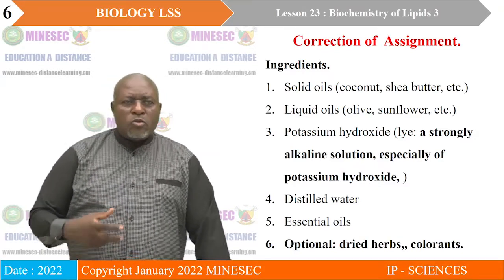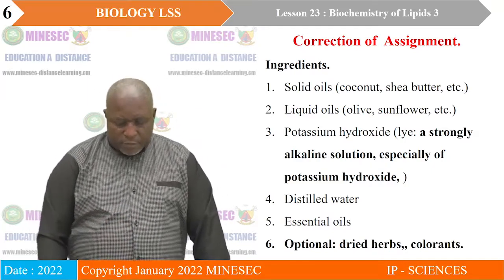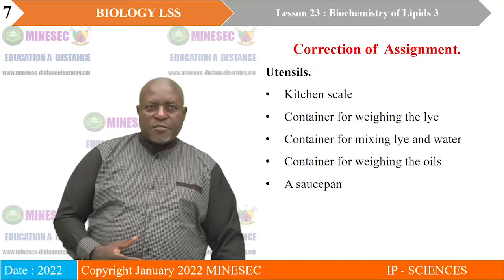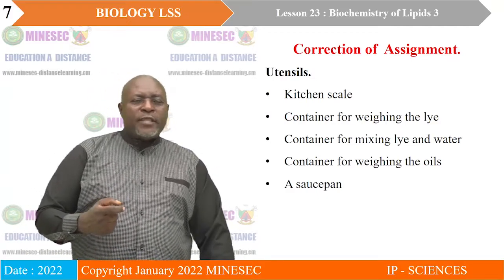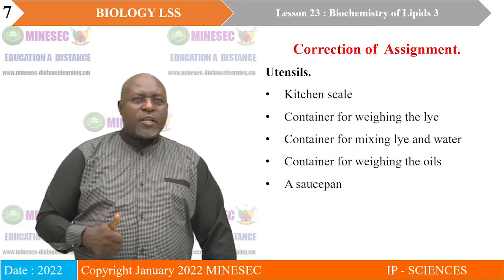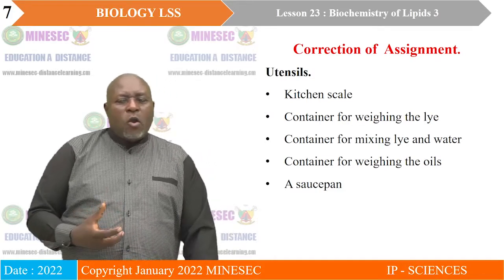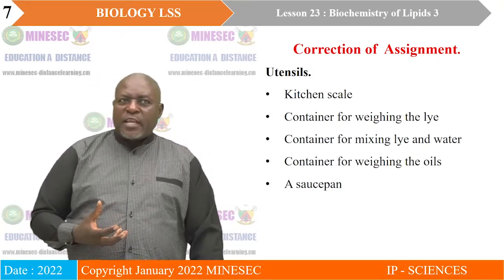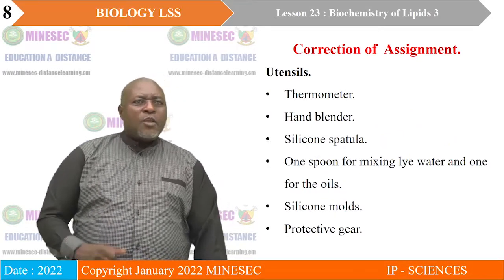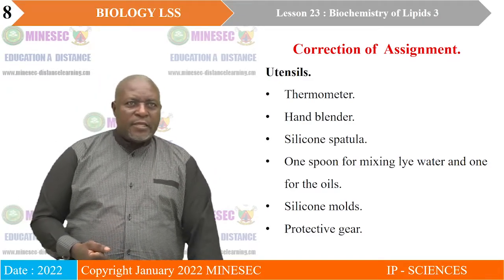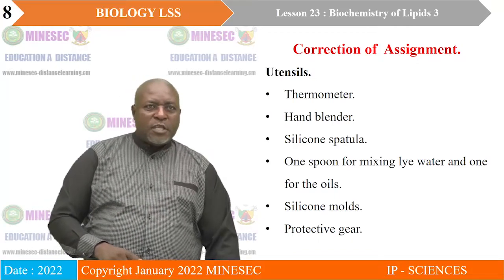You also need utensils: a kitchen scale to weigh the components; a container to weigh the potassium hydroxide or lye; a container for mixing the water and the lye; a container for weighing the oils; and a saucepan to heat solid oil to liquid before use. You need a thermometer, a hand blender, and a spatula — a spoon-like structure used to transfer substances into your mixture.